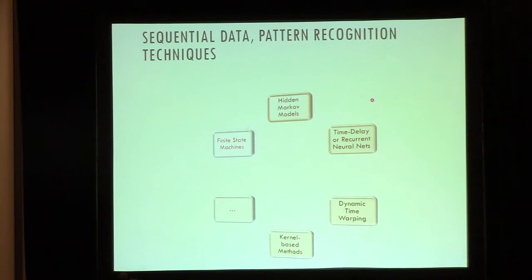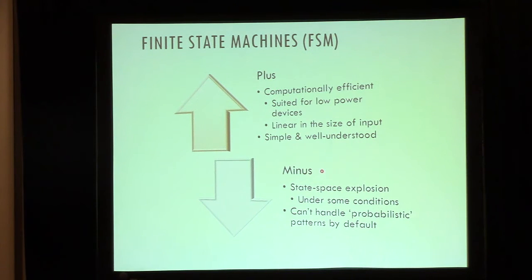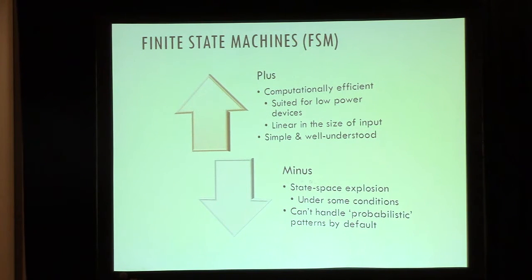There are many techniques available. The most commonly used one is hidden Markov models, but there are many others. I use plain old finite state machines. The thing about finite state machines is that they're computationally efficient, so they're suitable for these low-power wearable computer devices. However, there are some problems. You can run into the state space explosion in some cases, and the textbook doesn't tell you how to handle probabilistic patterns with these things. My talk is really about how you address some of these minus points and still make them useful for pattern recognition or gesture recognition.